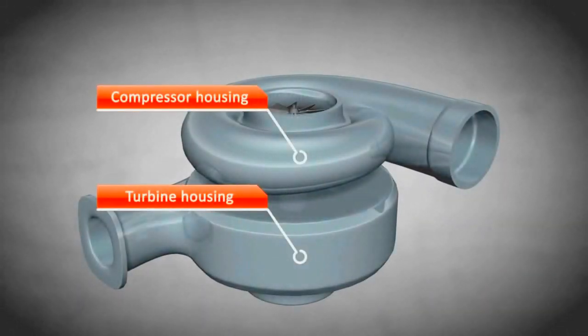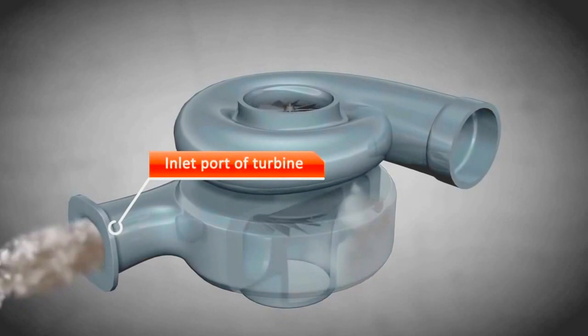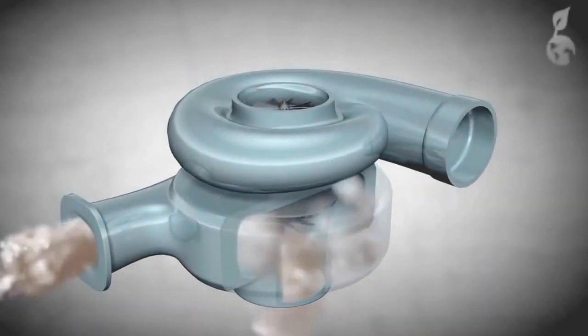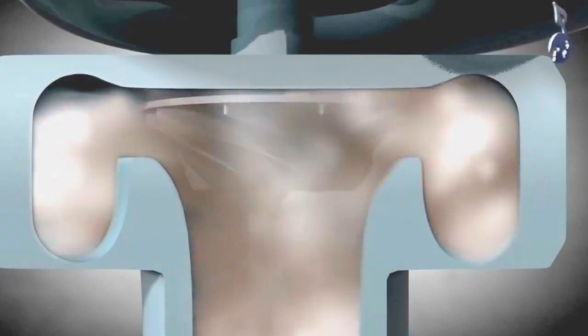The exhaust gas produced by the engine enters the turbine housing through the inlet port. At that point, thermal energy is converted into kinetic energy because of the constriction in the turbine. Consequently, the turbine is driven by kinetic energy.